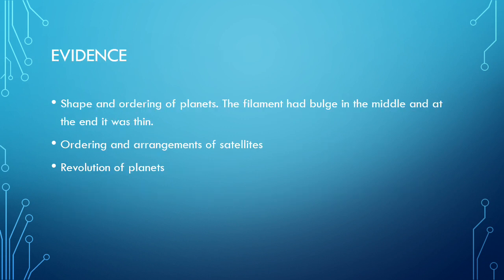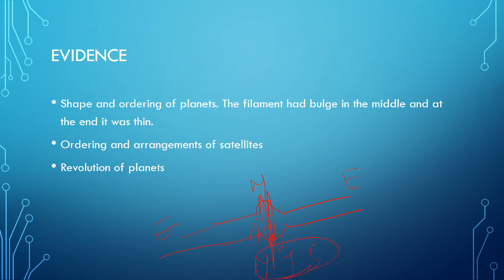This theory had some evidences to support it. The shape and ordering of planets: the filament ejected from the primitive sun was thicker in the middle portion and thin at the ends. Accordingly, planets like Mars, Jupiter, and Saturn in the middle were large in size, while the end planets were small in size. This supports the theory.